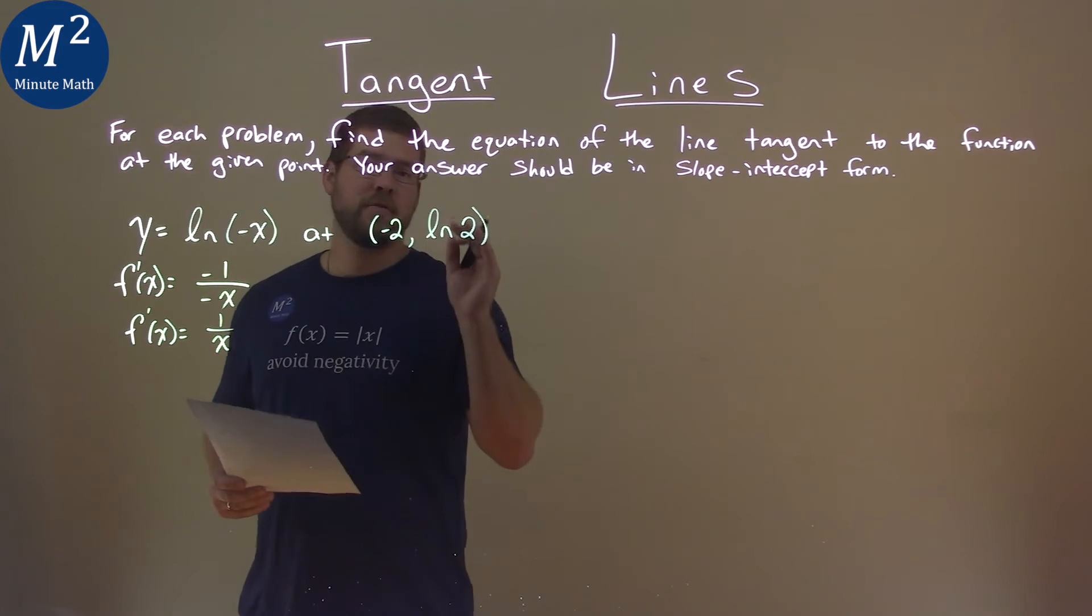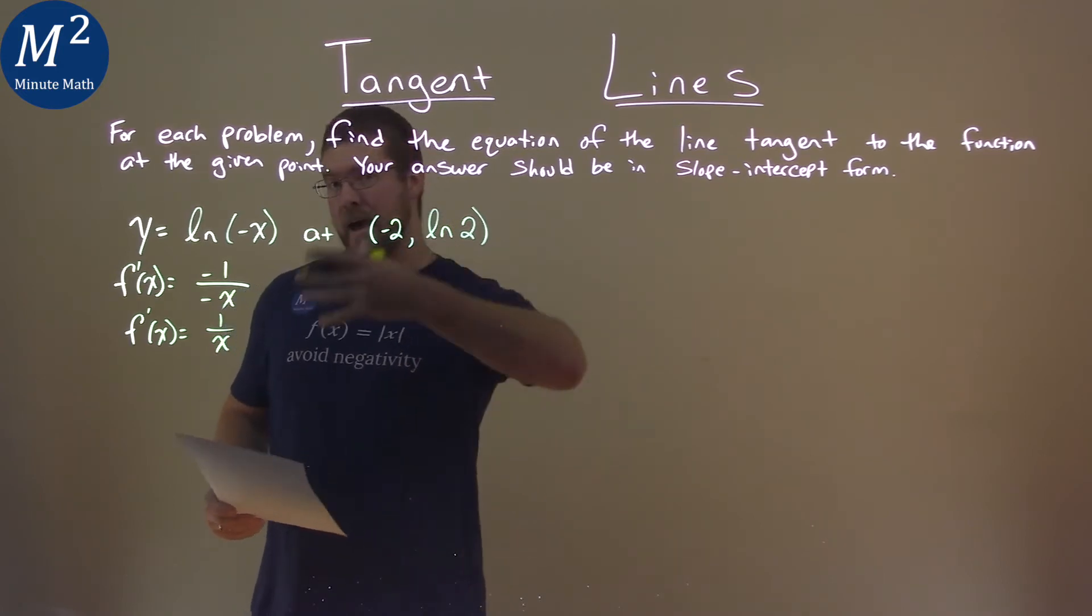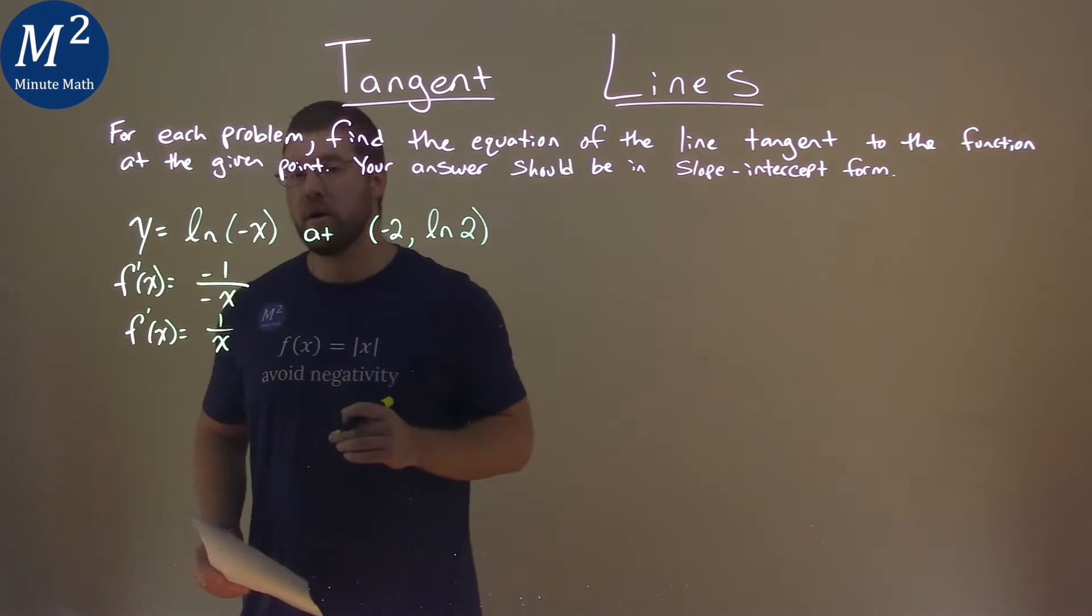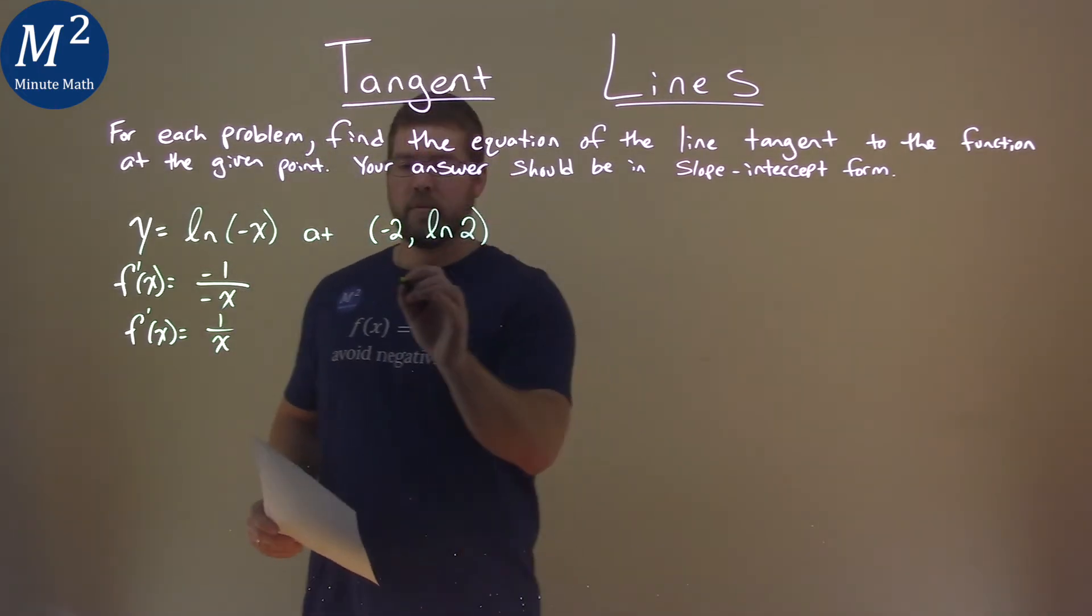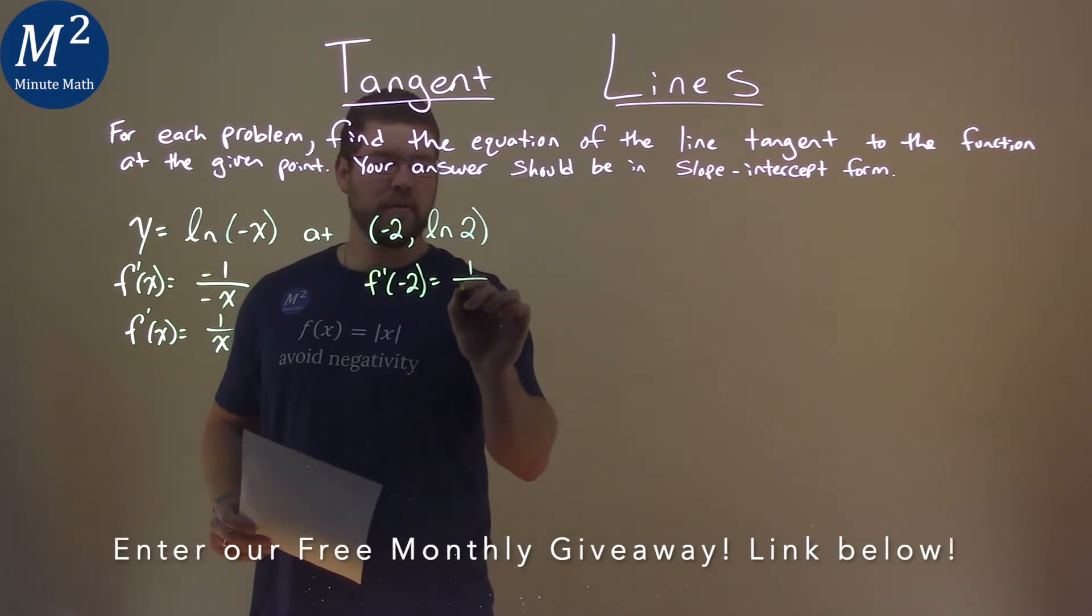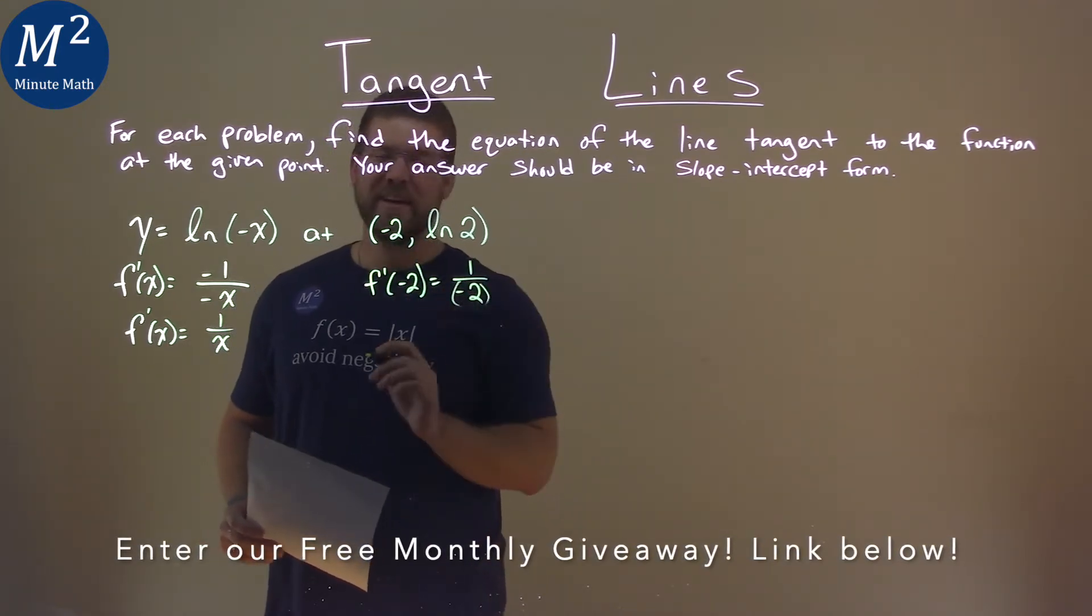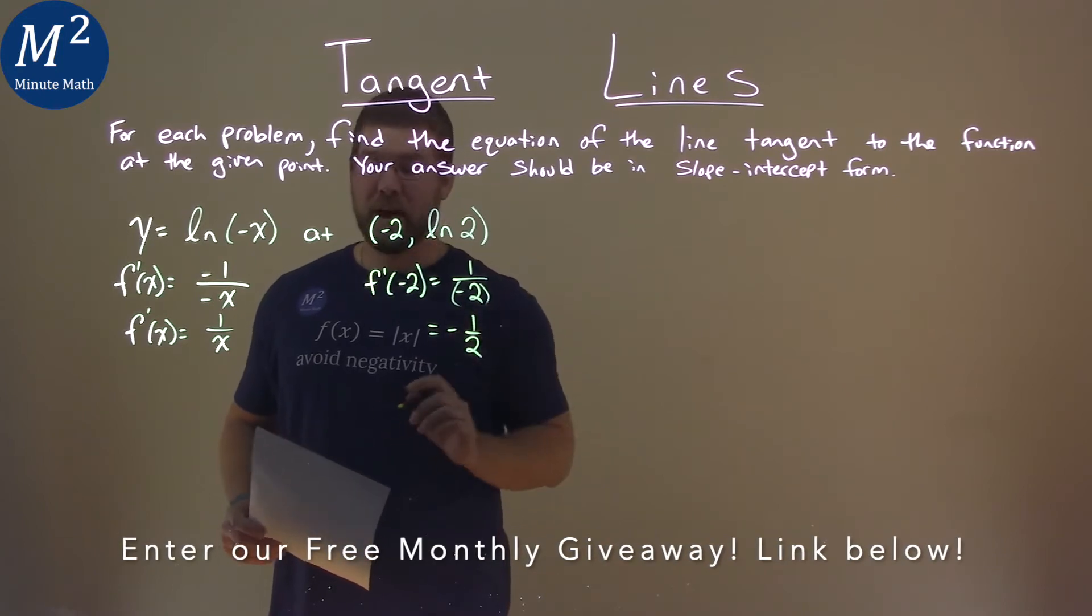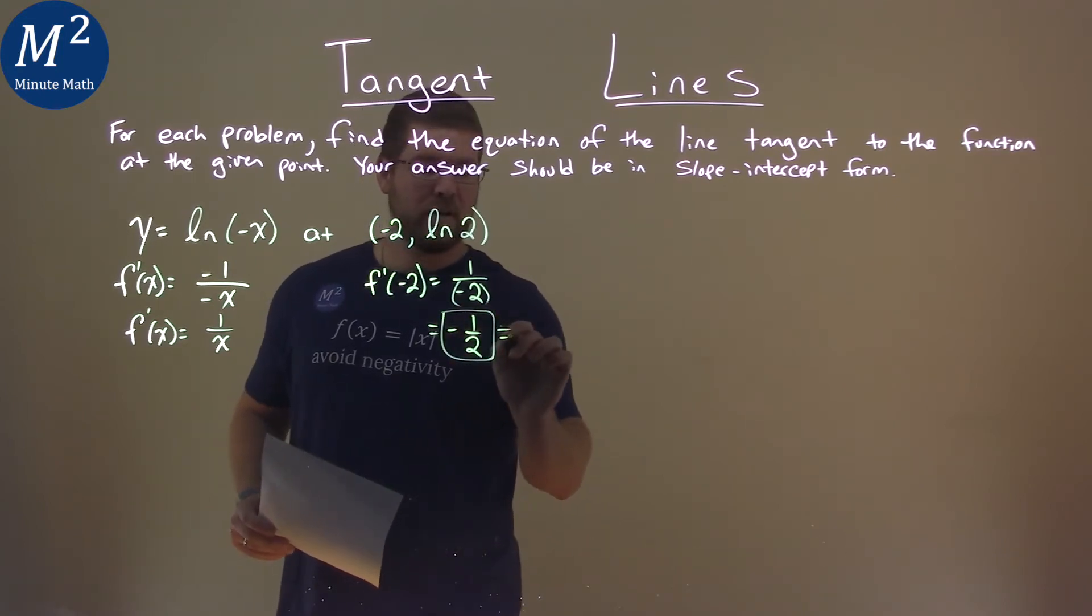From there, we want to find the slope of the tangent line at this point. We take our x value here and plug it into our derivative. So we have f prime of negative 2 is equal to 1 over negative 2. Pretty easy here. And we have a negative 1 half when we see it like that. And that is our slope.